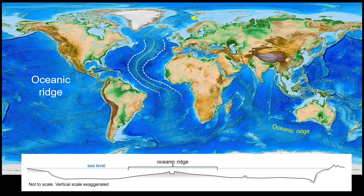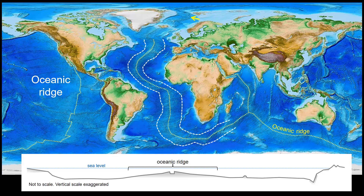The first feature we'll highlight is a relatively wide oceanic ridge system that can be traced through all the ocean basins. While higher than the surrounding ocean floor, the crest of the ridge system is still about 2.5 kilometers below sea level. As you learn more about plate tectonics, you'll discover how such a large feature could form on the ocean floor.